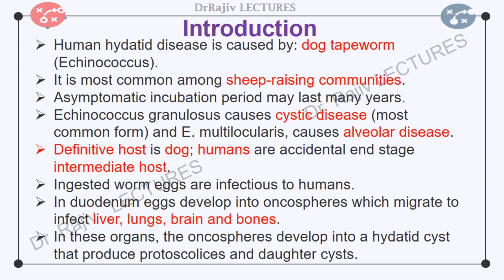Dogs become infected by eating the viscera of sheep that contain hydatid cysts. The adult worm resides in the small intestine of the dog. It releases eggs that are passed in dog faeces and are infectious to humans. Humans are an accidental intermediate host and an end stage of the parasite. After ingestion by an intermediate host, eggs hatch in the duodenum and release oncospheres. The hooklets of oncospheres penetrate the intestinal wall and migrate through the circulatory system into various organs, especially the liver, lungs, brain and bones.